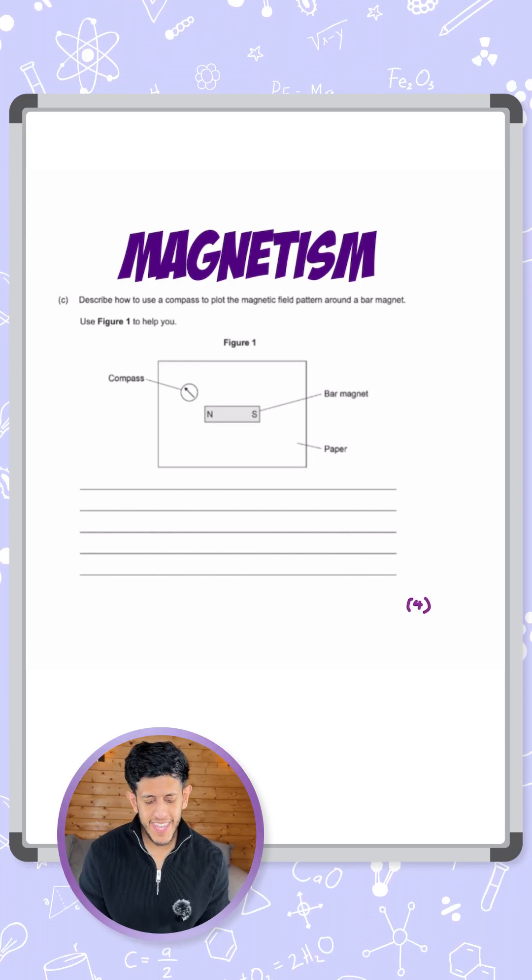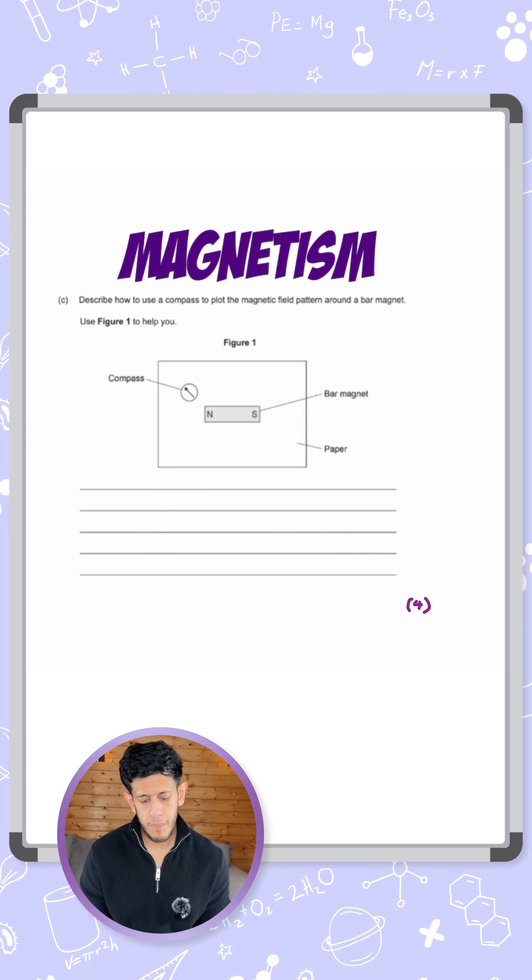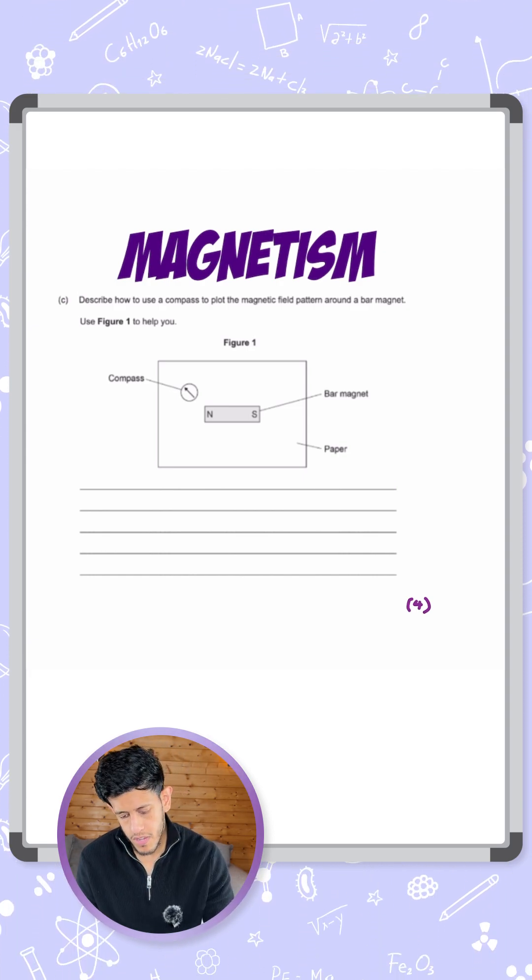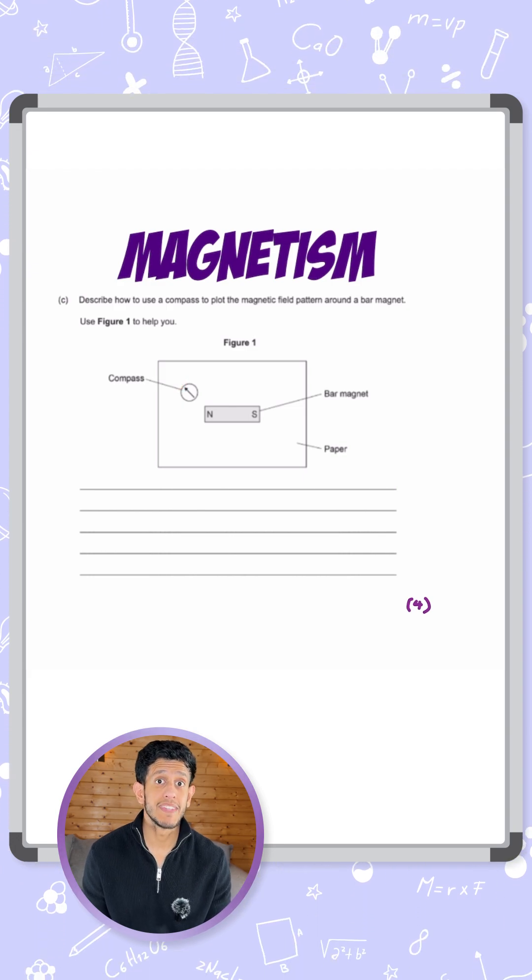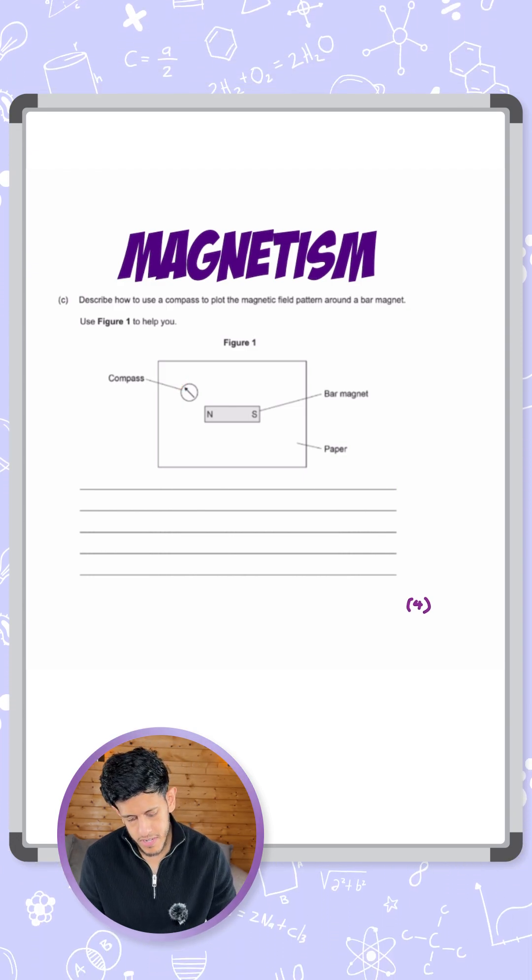They've given the initial step here which is to place the compass at some point around the magnet - you have to start somewhere. You can see when the compass is near it, it's causing the compass to point in a particular direction. The arrow is pointing to the top left.